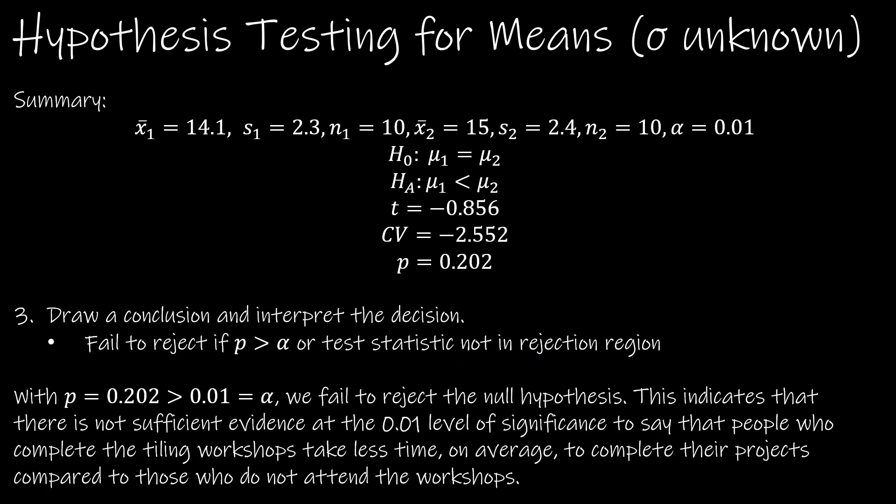So my conclusion. With P equals 0.202 greater than 0.01, which is alpha, we fail to reject the null hypothesis. Remember, we're always talking about the alternative. So this indicates there is not sufficient evidence at the 0.01 level of significance to say that people who complete the tiling workshops take less time on average to complete their projects compared to those who do not attend the workshops.